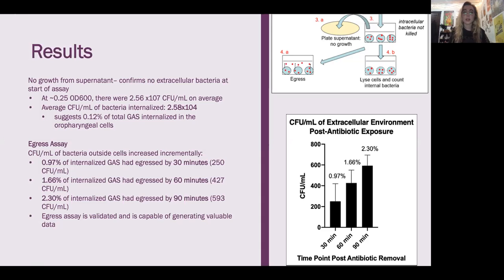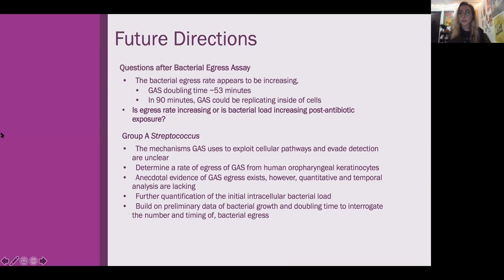This could mean that the rate of egress is increasing over time, though this is only one experiment in triplicate. Therefore, this project needs to continue before results can really be interpreted. The questions raised by the egress assay are that the egress rate appears to be increasing, though because group A strep's doubling time is every 53 minutes, it is possible that at the 90-minute sample the group A strep could have already replicated inside of the cells. So it raises the question: is the egress rate increasing, or is bacterial load increasing after antibiotic exposure because they've had the opportunity to replicate again? Other questions overall for the rest of this project: the mechanisms group A strep uses to exploit cellular pathways and evade detection are still unclear and need to be addressed.